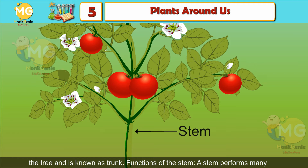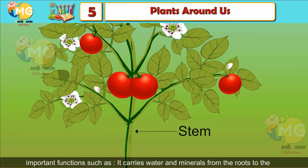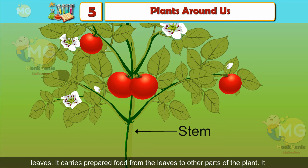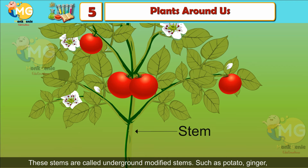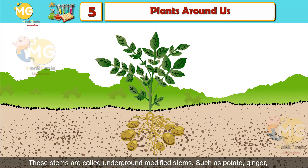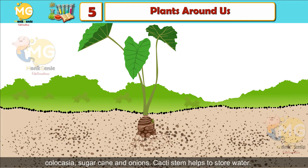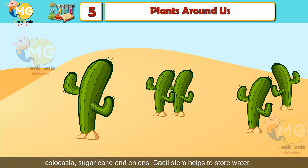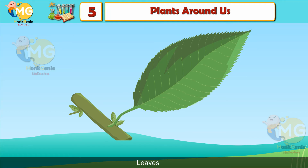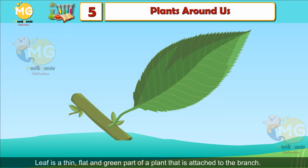The stem carries water and minerals from the roots to the leaves, and carries prepared food from the leaves to other parts of the plant. It stores food in some plants. In some plants, stems grow below the ground and are called underground modified stems — such as potato, ginger, colocasia, sugarcane, and onions. The cactus stem helps to store water.